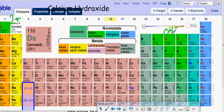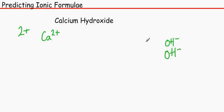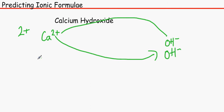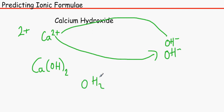So we have Ca²⁺, which has 2 electrons to spare, and the hydroxide ion, which needs 1 electron. That means we need 2 hydroxide ions — one electron goes to each. So the answer is Ca(OH)₂. We can't write OH₂ without brackets because that would mean 2 hydrogens, so it's written Ca(OH)₂. That's how you predict the formula of ionic compounds. Thank you for listening to Ionic Bonding.